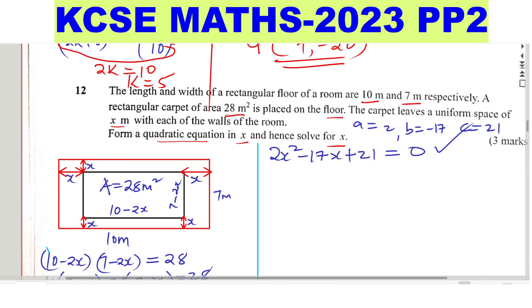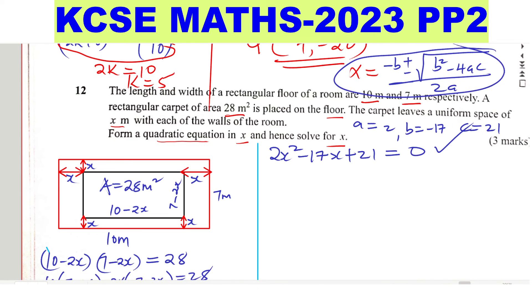You write the quadratic formula here. So x equals negative b plus or minus square root of (b squared minus 4ac) divided by 2a. So this is what you're going to use. So we just need to substitute.